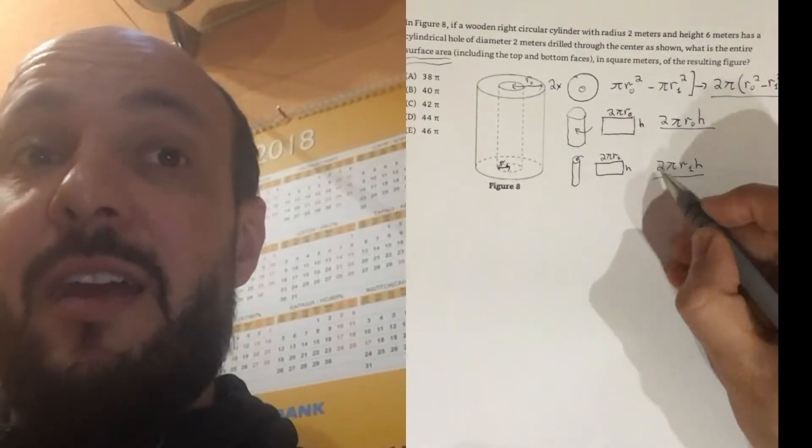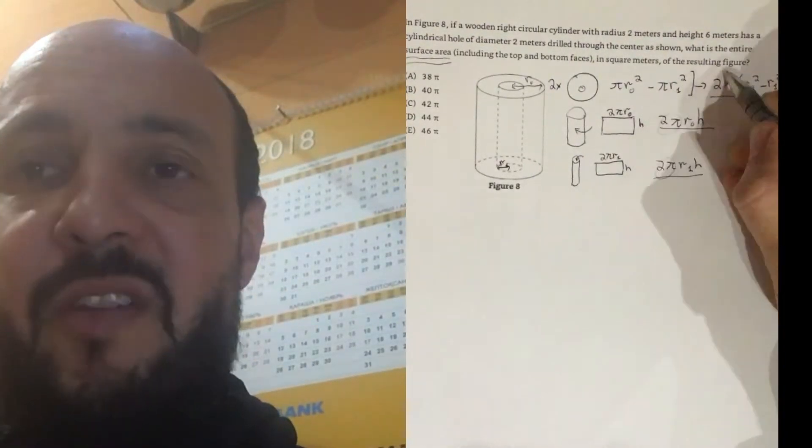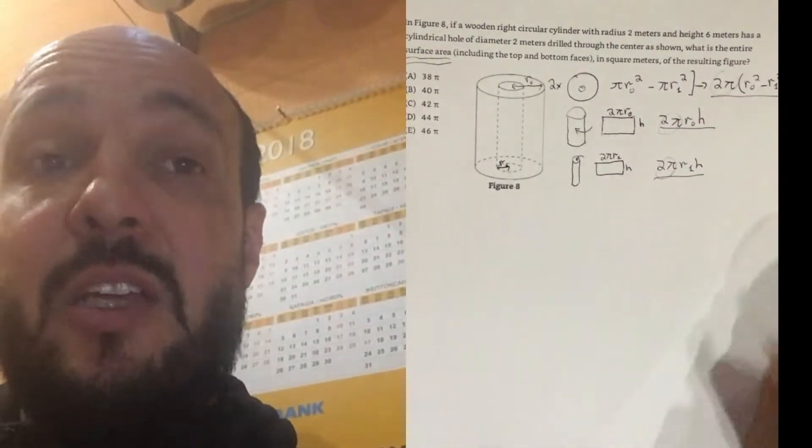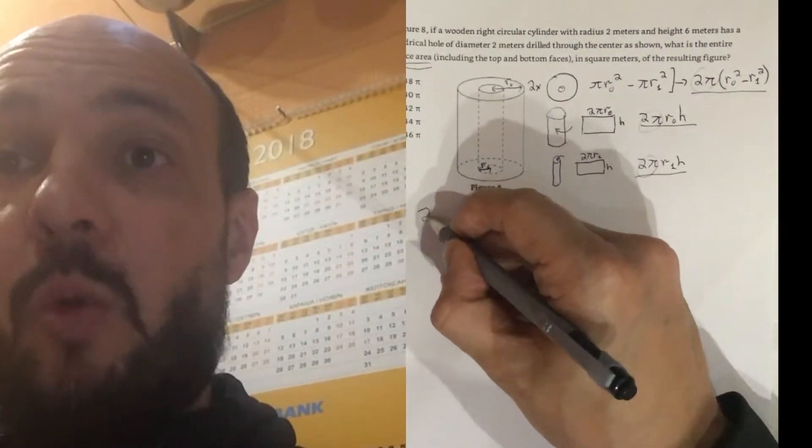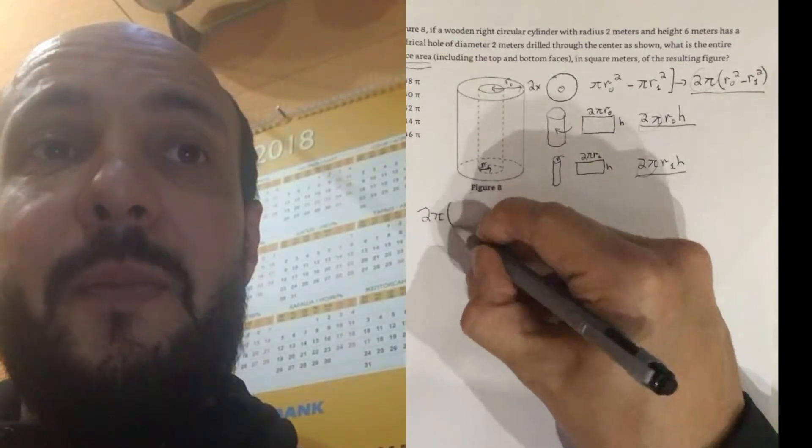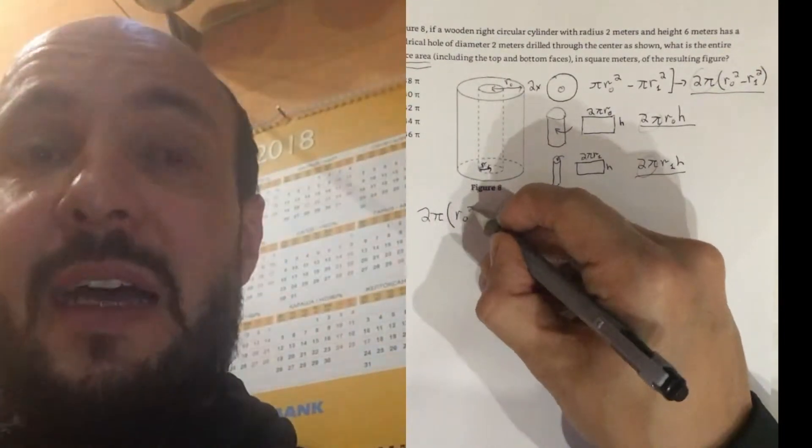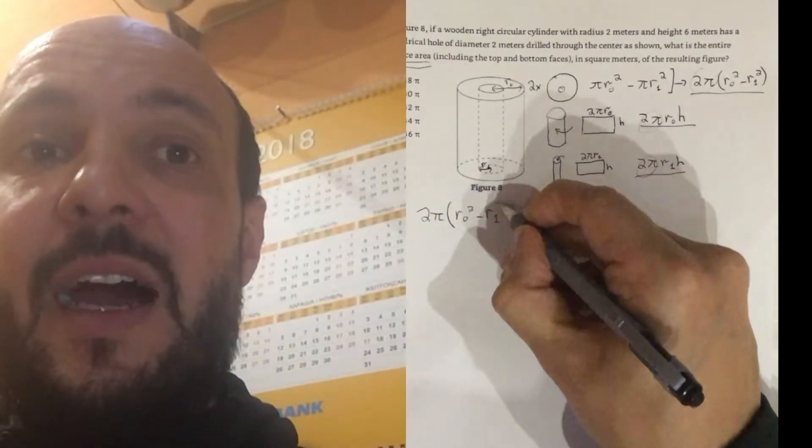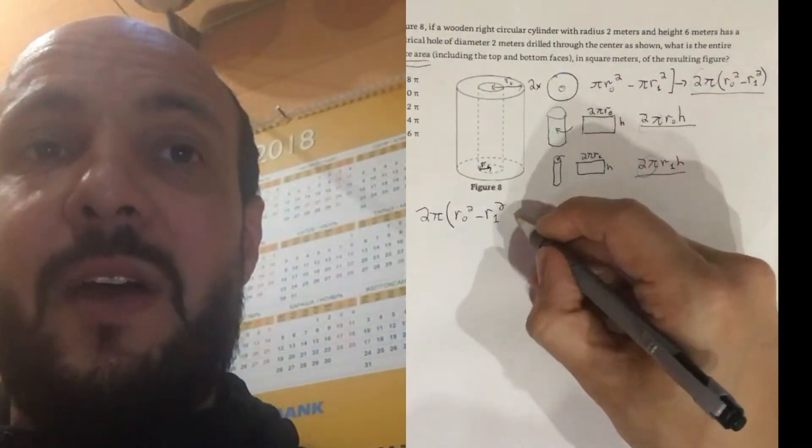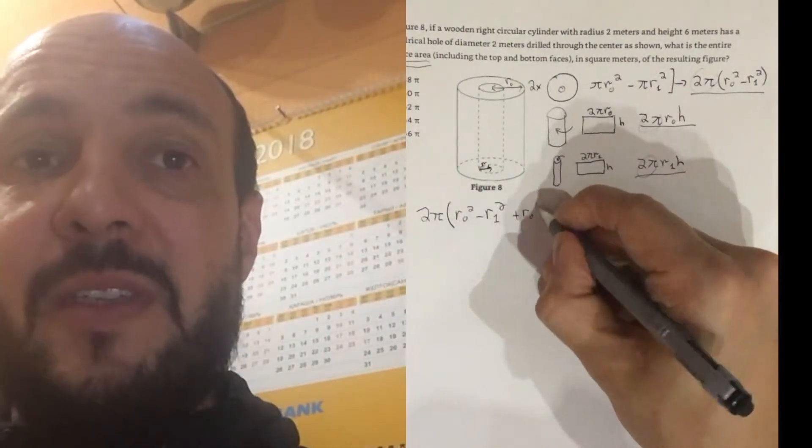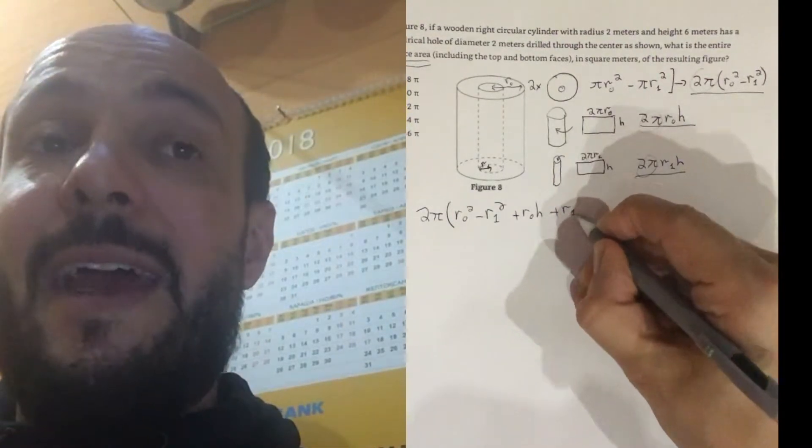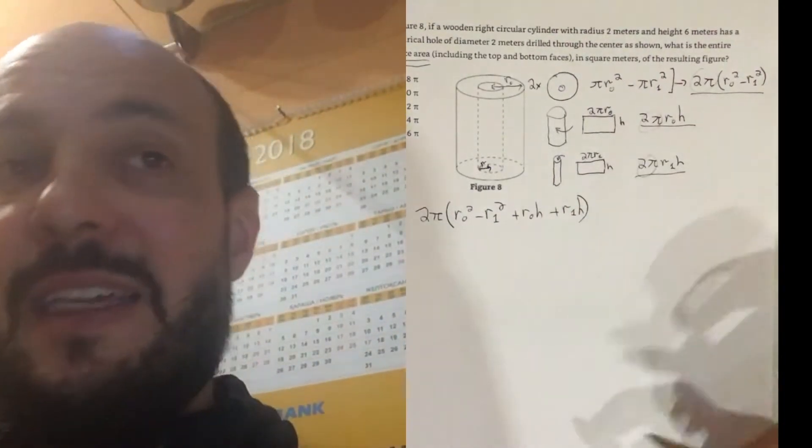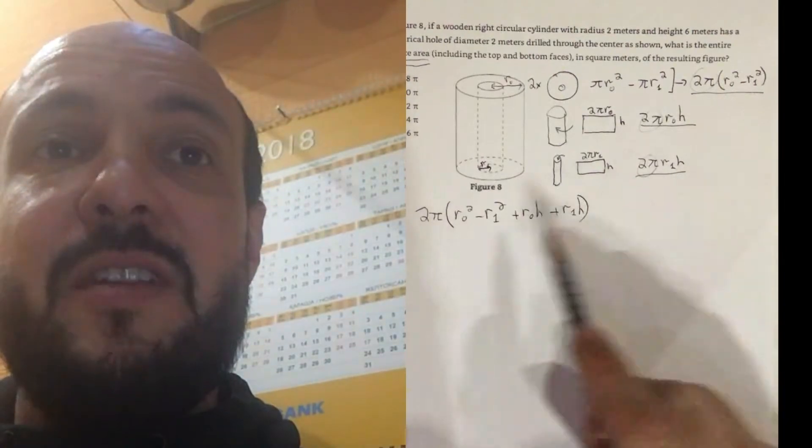That's all of the formulae for the areas that we'll need to add together to give us the total surface area of this solid. Now, we see all of our formulae have the common factor 2 pi, so we could write out our formula as one clean, simple formula. 2 pi times by r0 squared minus r1 squared, then from our big rectangle plus r0 h, then from our small rectangle plus r1 h. So, we've got 2 pi times by this sum of different areas.